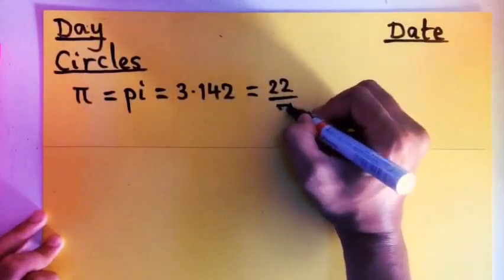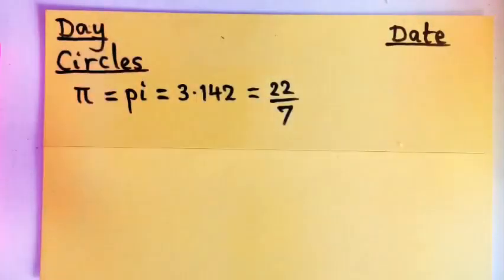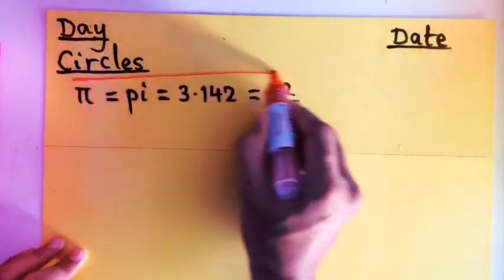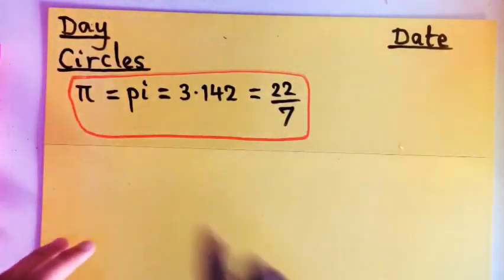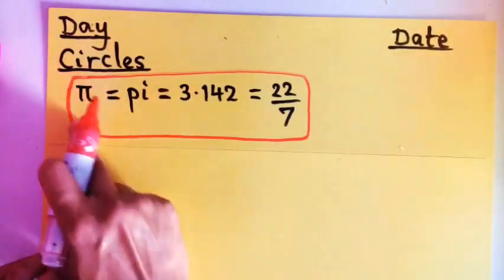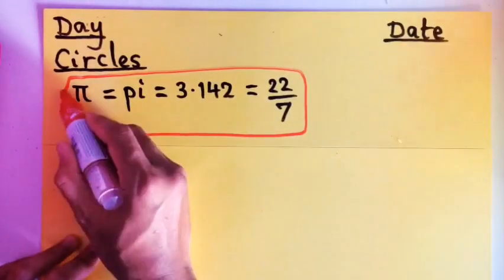Let me introduce you to the value of pi. This is one of the Greek letters. The value will be 3.142 if you use decimal, and if you use fraction, the value will be 22 over 7.